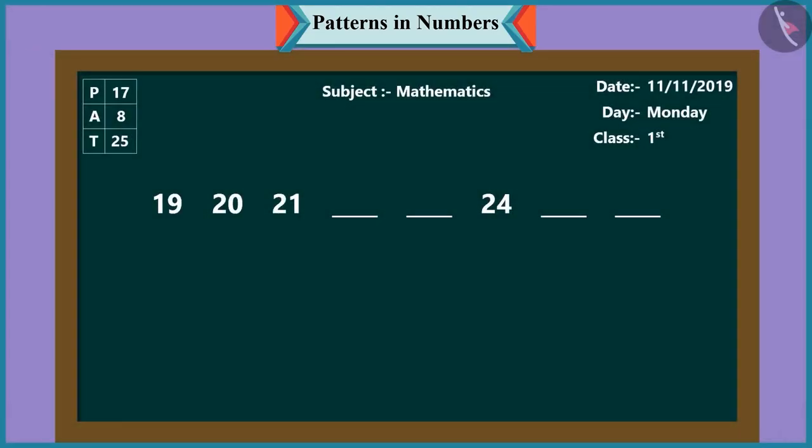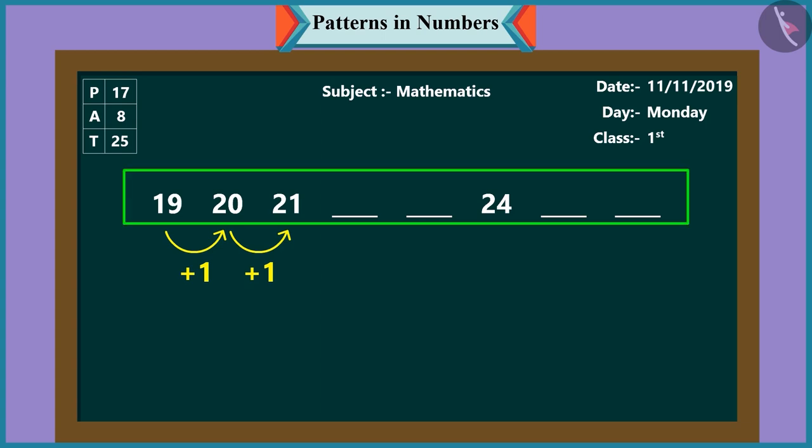Now look, another pattern of numbers. Come, let us understand this one. In this pattern, it is nineteen, then twenty, then twenty-one. This means that each time the numbers are increasing by one. Yes. So, Chutki, you tell me what comes next in this pattern.